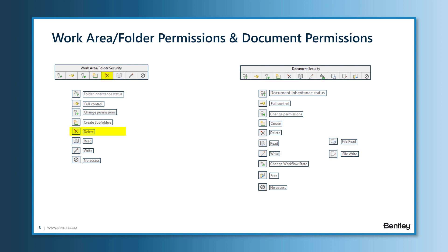We also have the ability to recover deleted folders and deleted documents, which was already covered in an earlier lesson. The View option allows the ability to view the selected folder and subfolders. Rename allows the ability to rename the folder or change the folder description. No Access — when this is checked, all the other folder permissions will be automatically turned off, including full control.